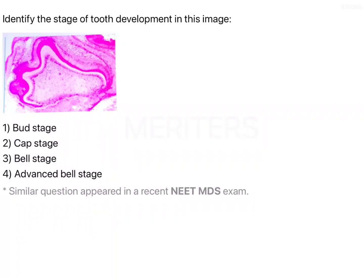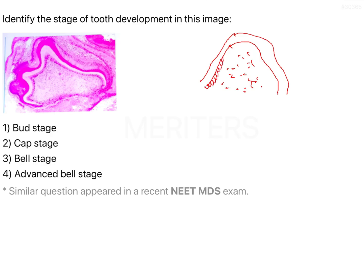Identify the stage of tooth development in this image. What we're seeing is a growth with a layer and another layer inside, then a very loose connective tissue stroma with a lot of cells. You have columnar cells arranged in a particular fashion, then an eosinophilic (pink) layer, another eosinophilic layer, and following that another layer of tall columnar cells. You can also see something basophilic in this region.